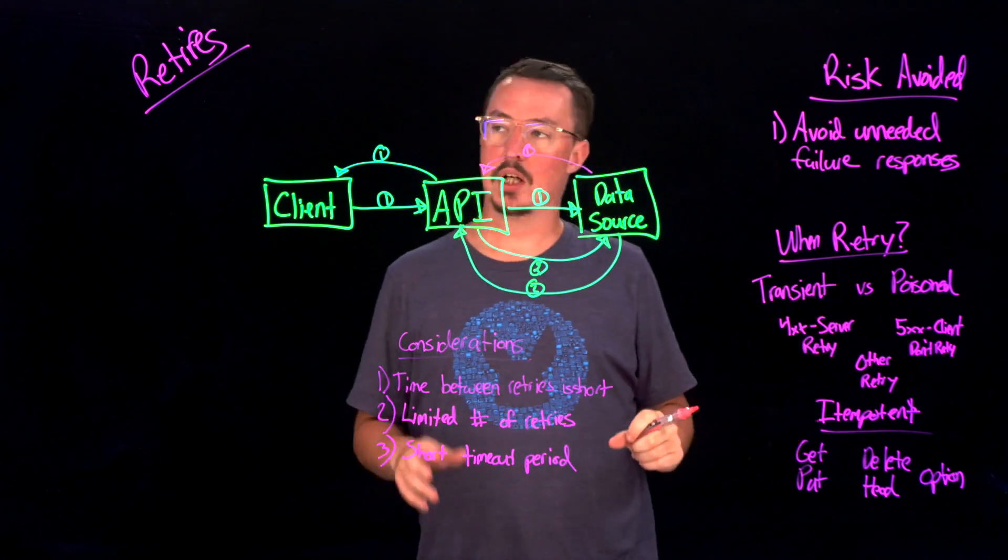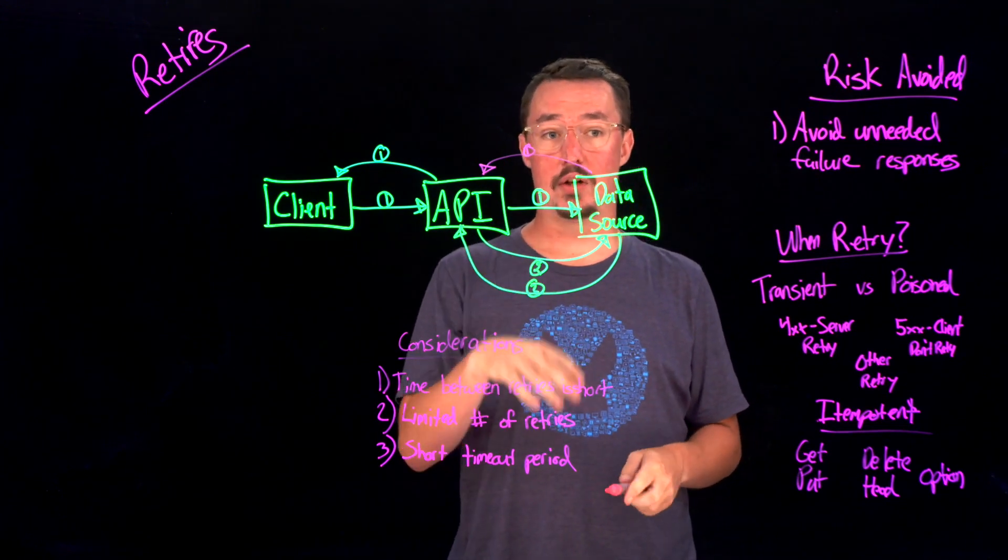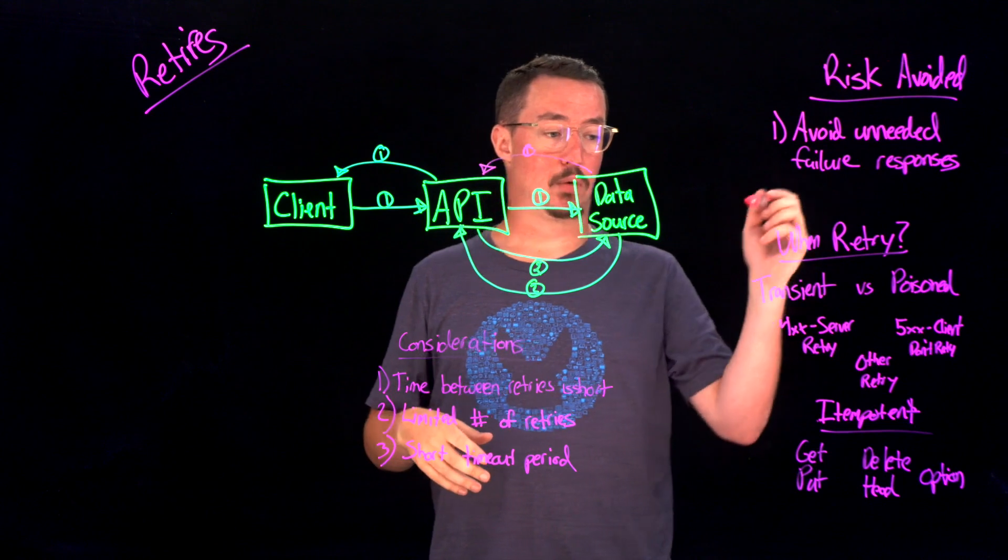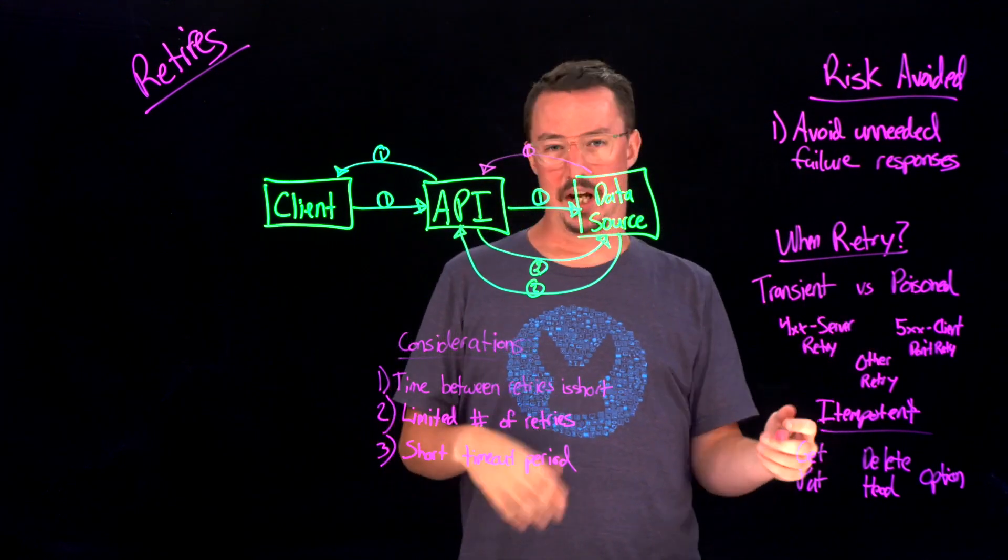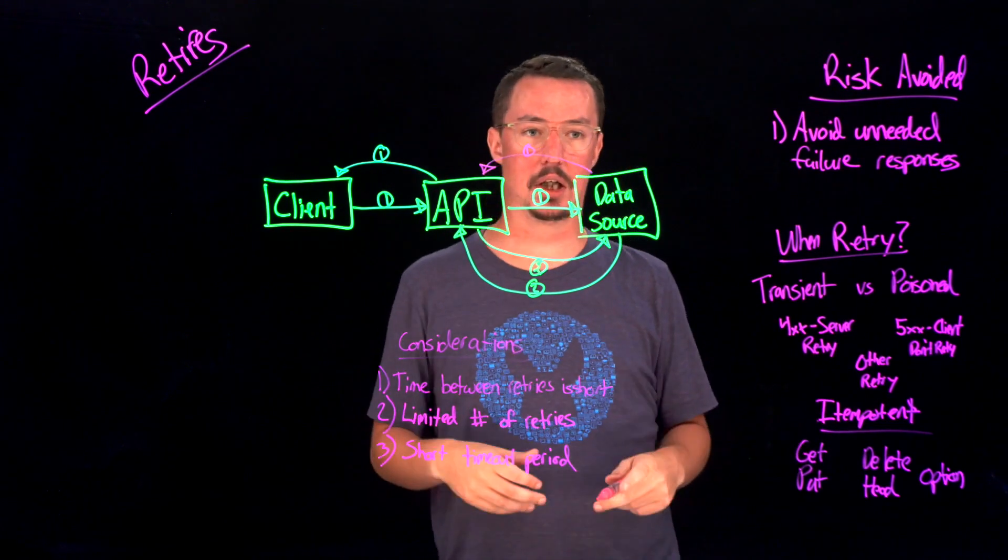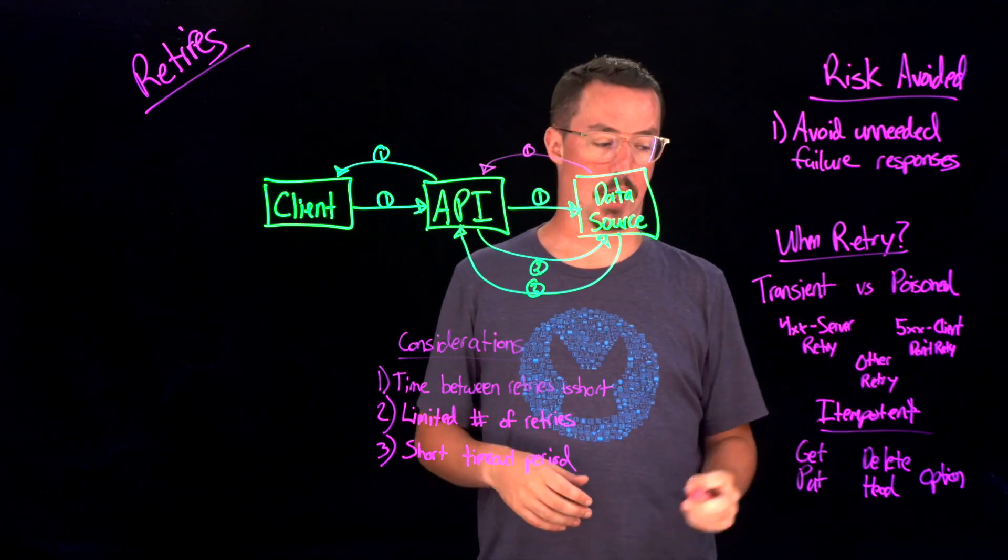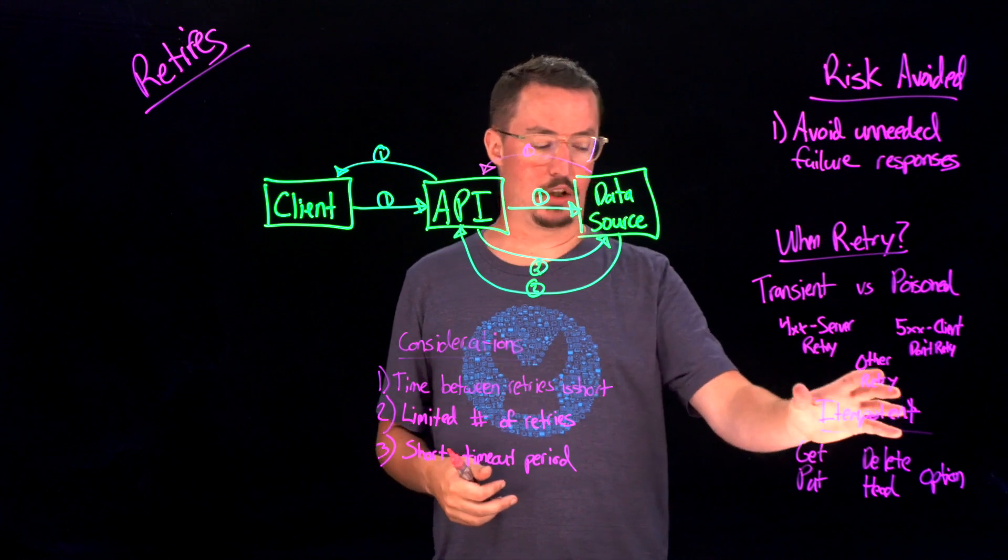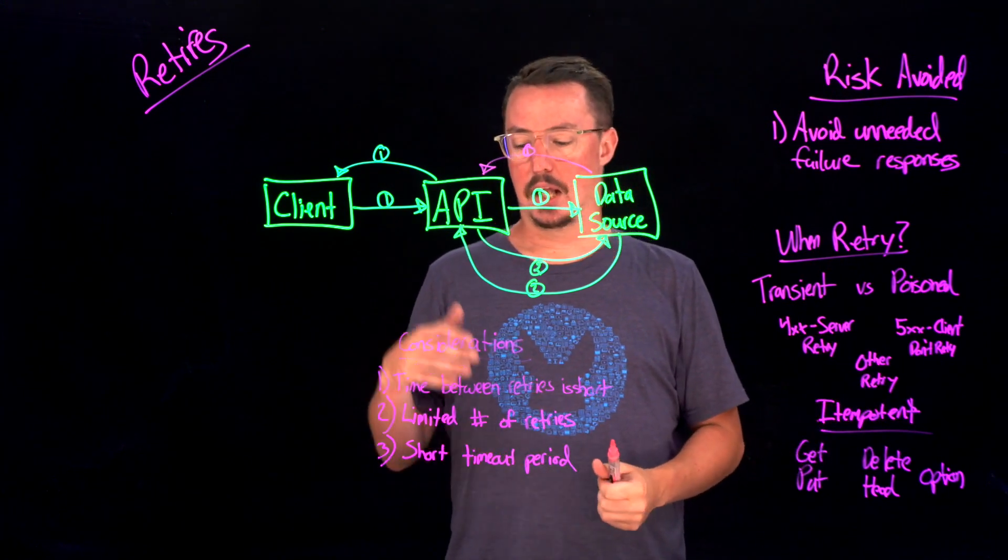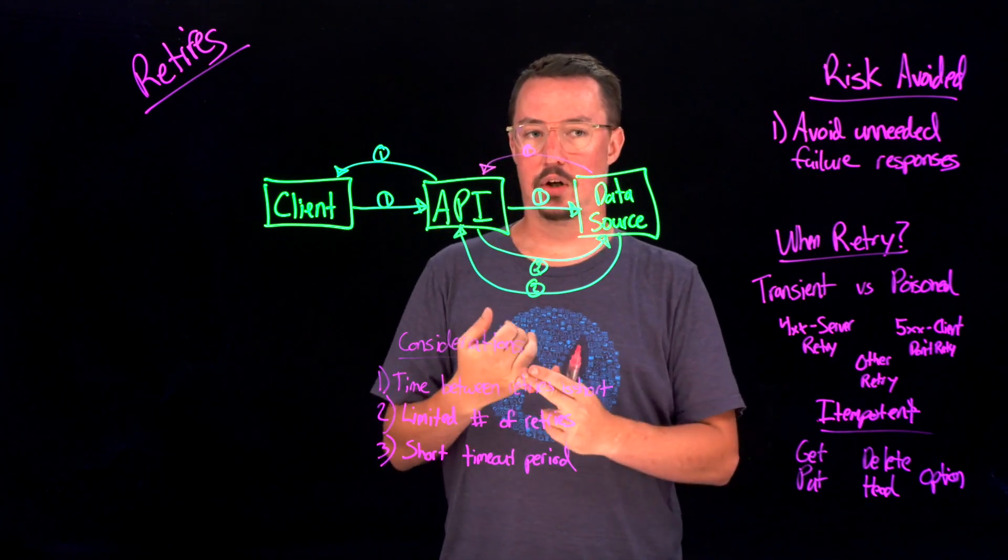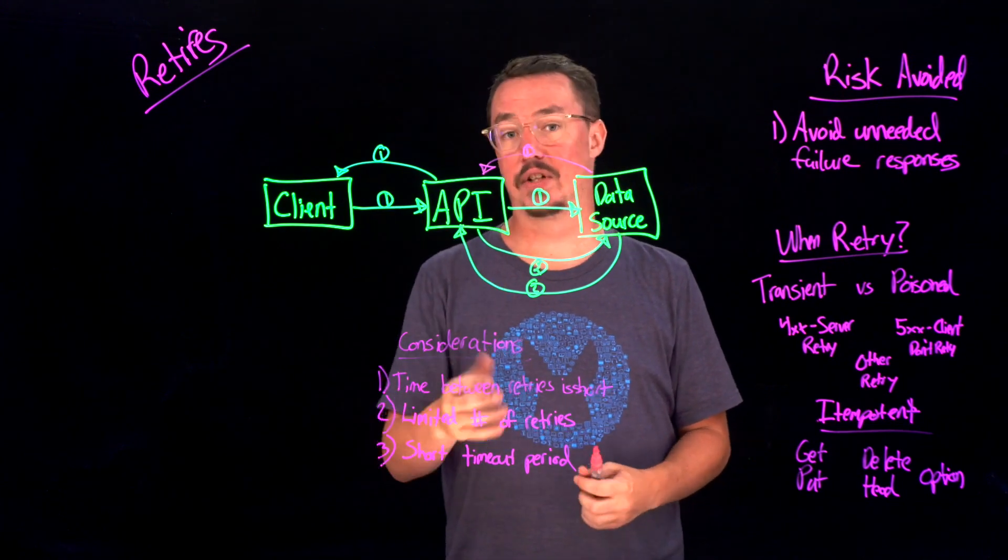So just to recap really quickly, our retry strategy is really going to be used for avoiding unnecessary failure responses back to your client. You want to make sure that you're only retrying on transient messages and not on poisoned messages. If you're unsure, you can go ahead and retry. It's not really going to hurt, but it's going to be more productive if you just make sure your client errors that you're not responding back with. The other things you want to make sure of is that you're using an idempotent HTTP method, such as GET, PUT, or DELETE, and that you have a limited number of retries. You have a short period of time in between when you do the retries, and that you also have a timeout period with that.